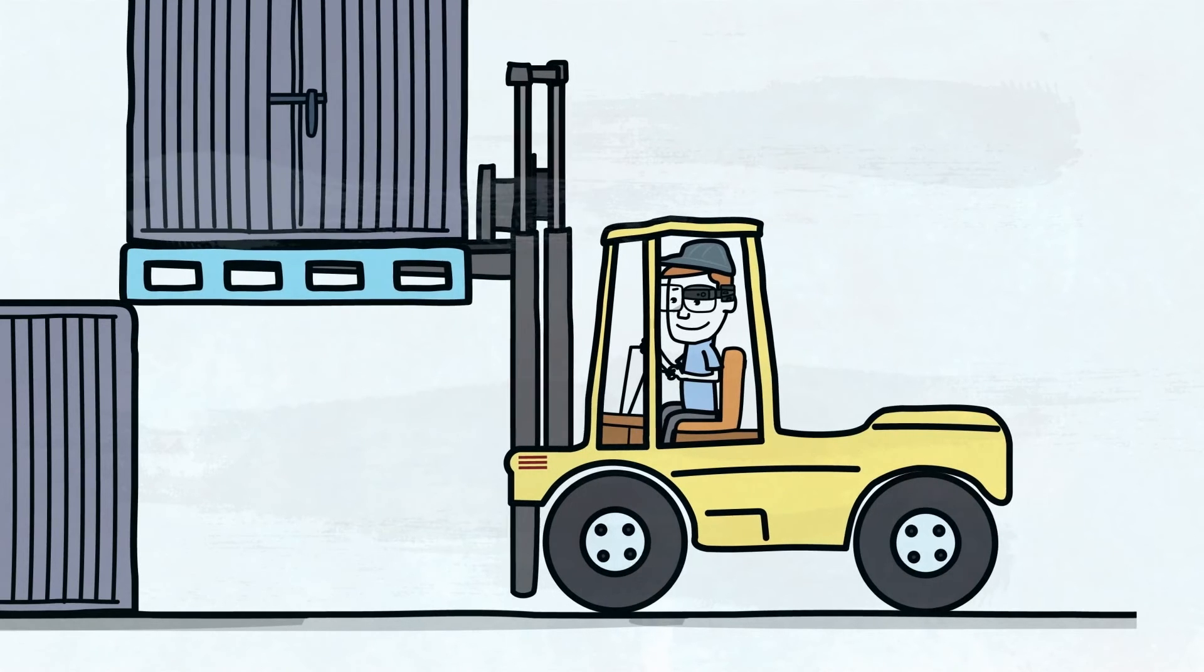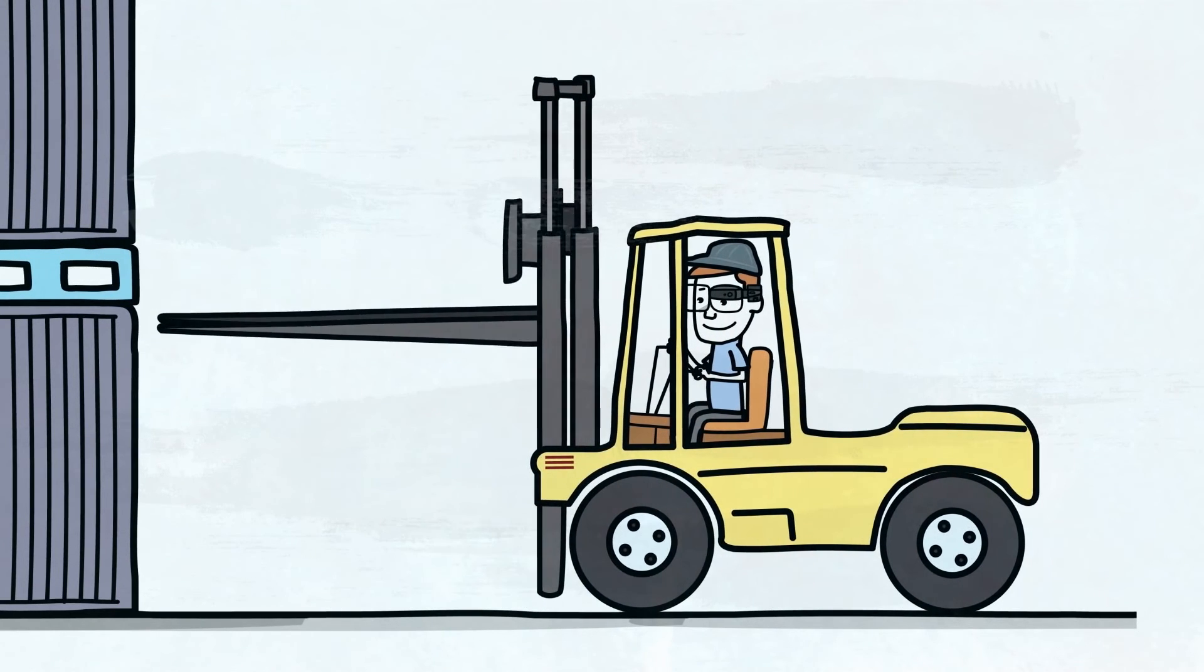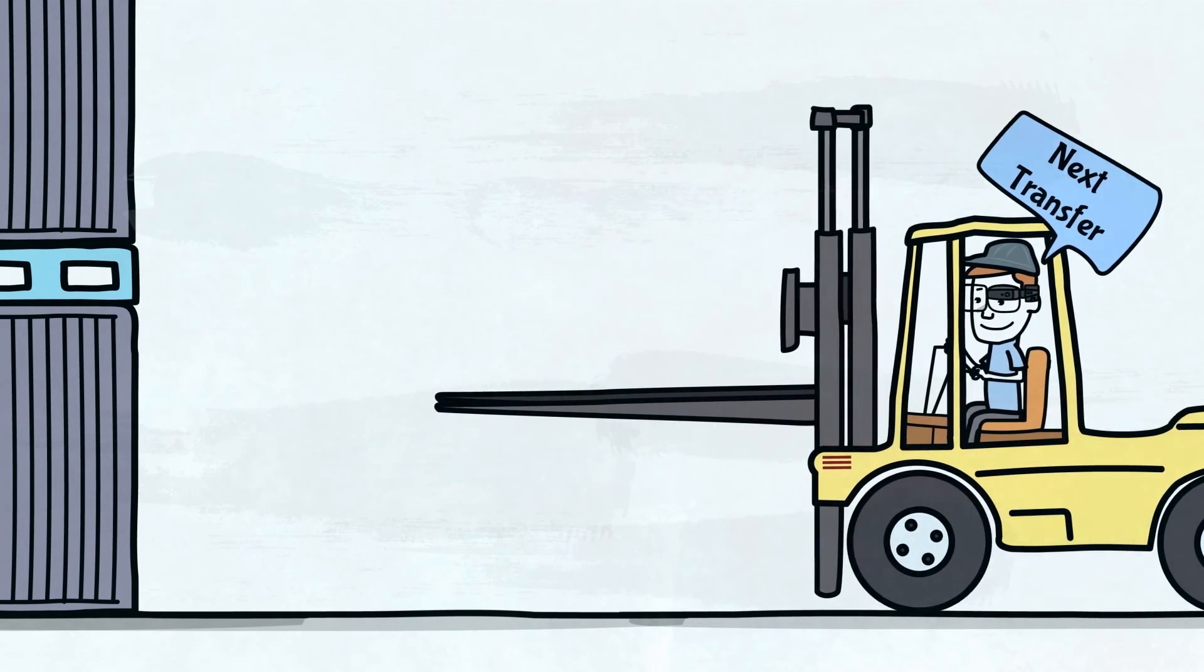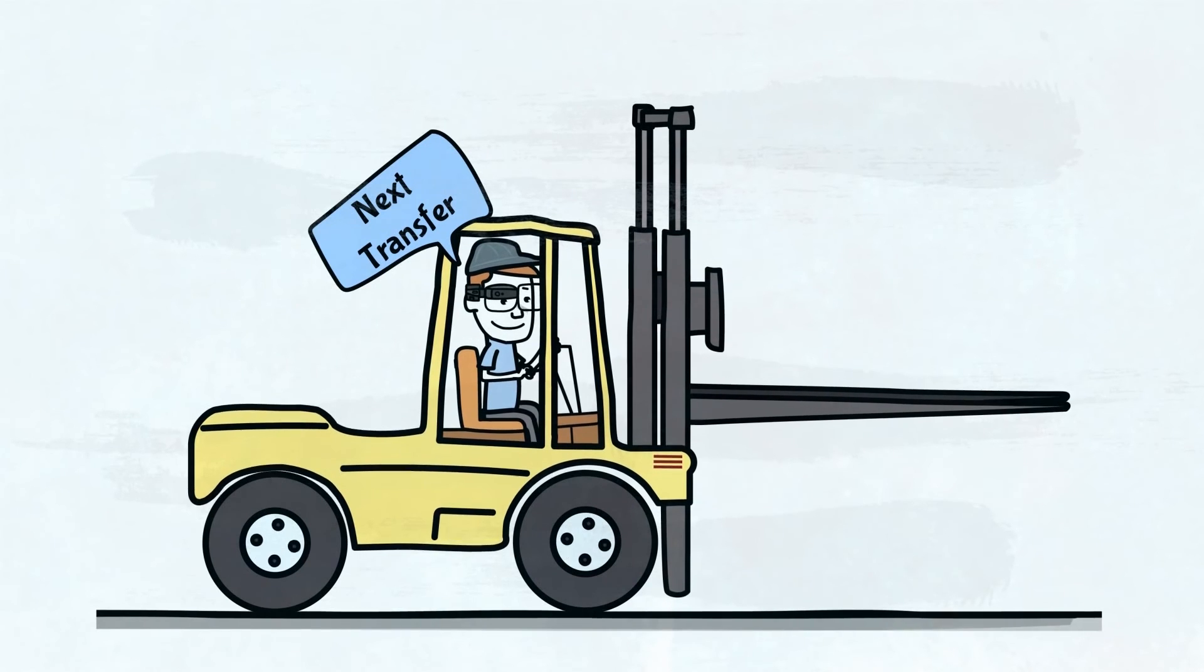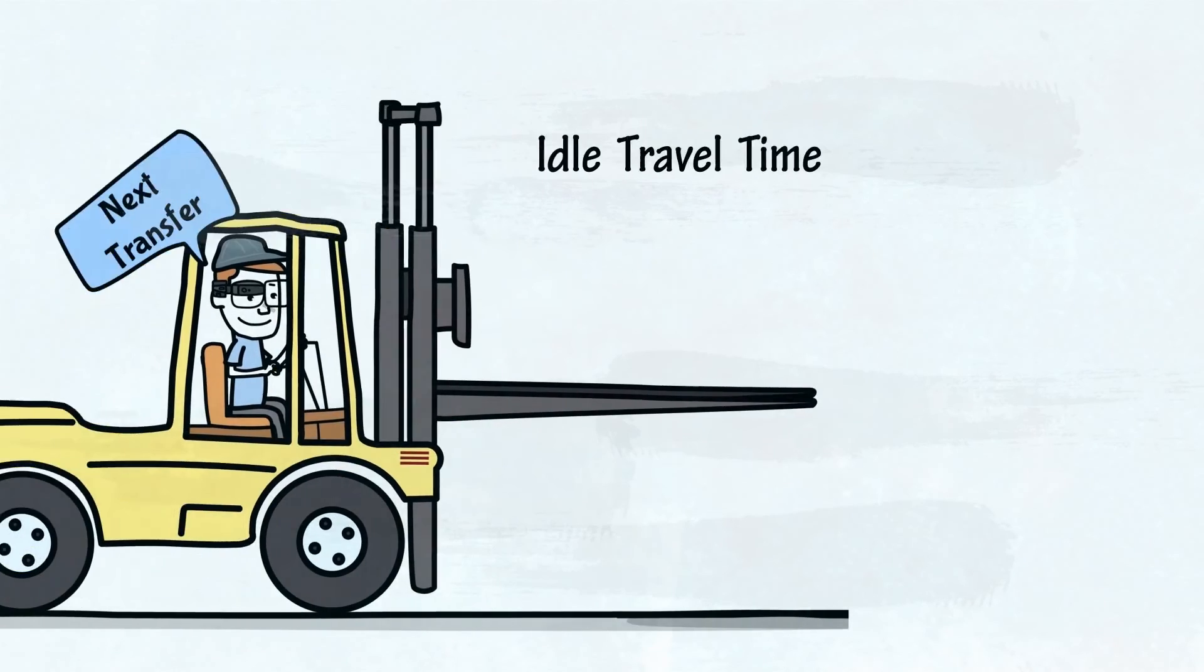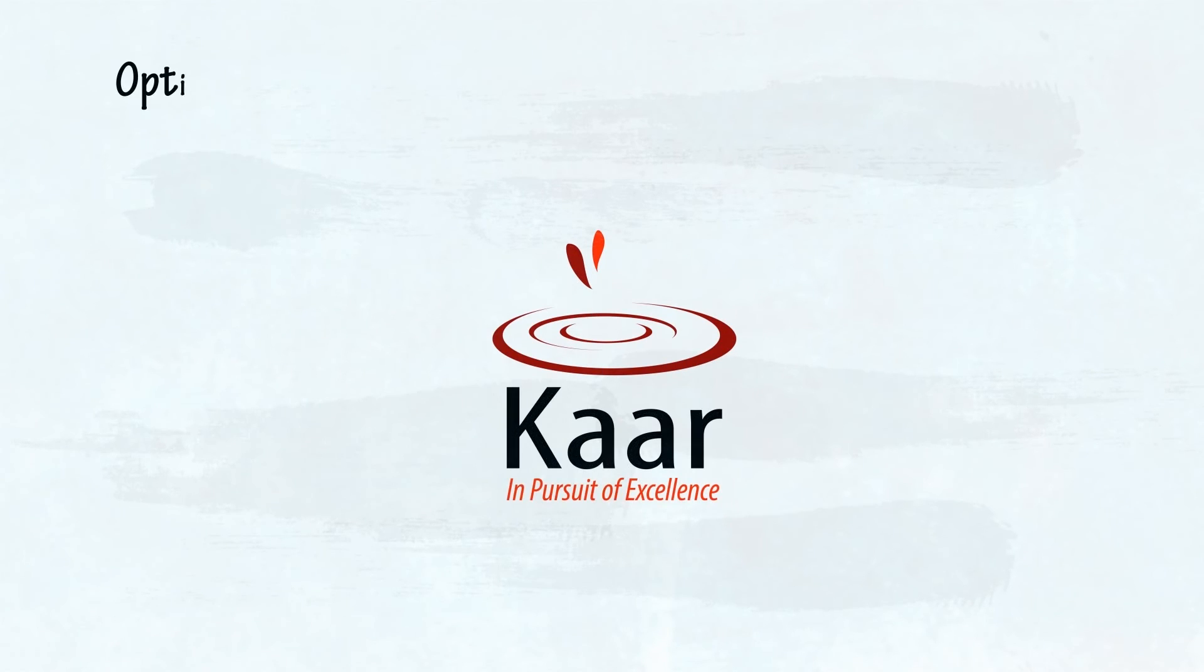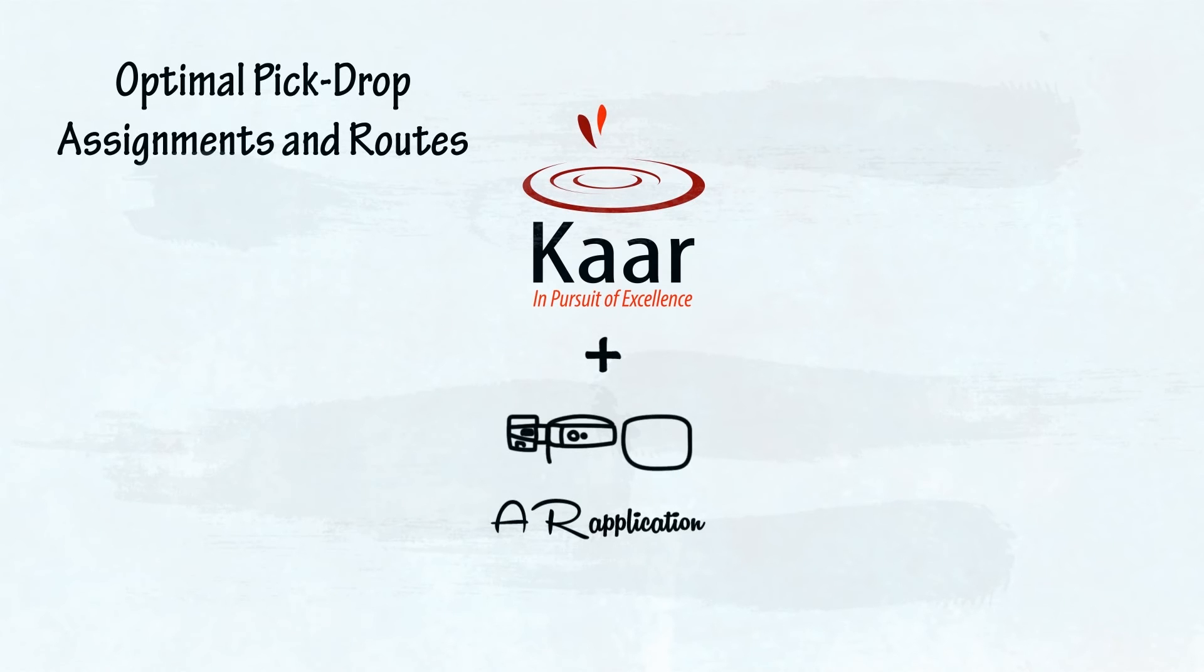Now being aware of the exact location of the forklift operator, the system assigns the next transfer whose source machine is in closest proximity to his current situation. Thus the idle travel time of the forklift is brought down to a minimum. In this manner, the most optimal pick-drop assignments and routes are determined by Kaar's Forklift AR application based on the ERP system's feed, leading to saving of considerable time and efforts.